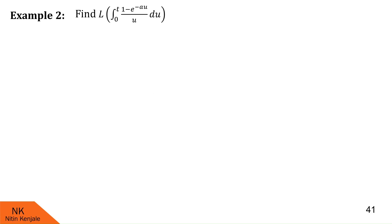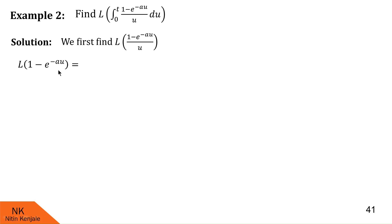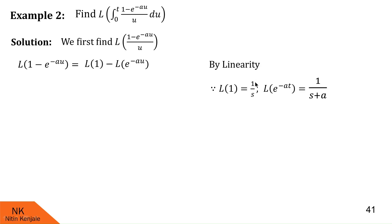Now let us proceed to the next example. Here we are asked to find the Laplace transform of the integral of (1 − e^(−au))/u du over the limit 0 to t. To find this, one has to first find L{(1 − e^(−au))/u}. For that, we first find L{1 − e^(−au)}. By linearity property, this is L{1} − L{e^(−au)} = 1/s − 1/(s + a). This is φ(s).